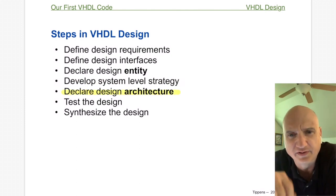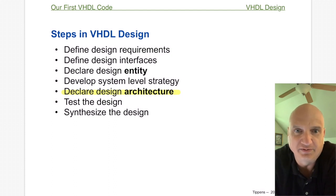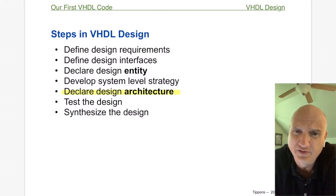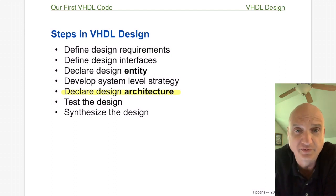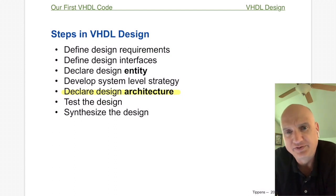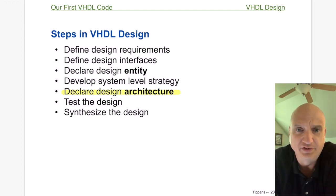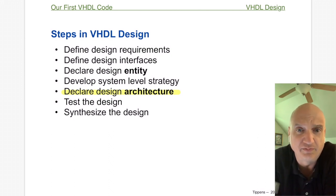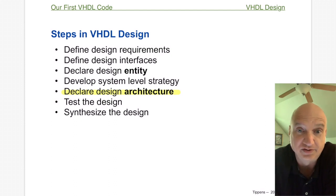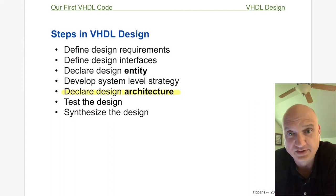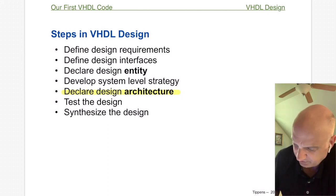The next step is to declare the architecture. A lot of people think this is the big step because this is where you write the code — the definition of how it functions — but really, if you've done a good job on the system-level strategy, this step is fairly trivial. In the designs I do, I'll spend sometimes weeks on the internal design depending on complexity, and then maybe a couple of days on the architecture step, because writing the code to implement the design is not that complex — the design process is what's complex.